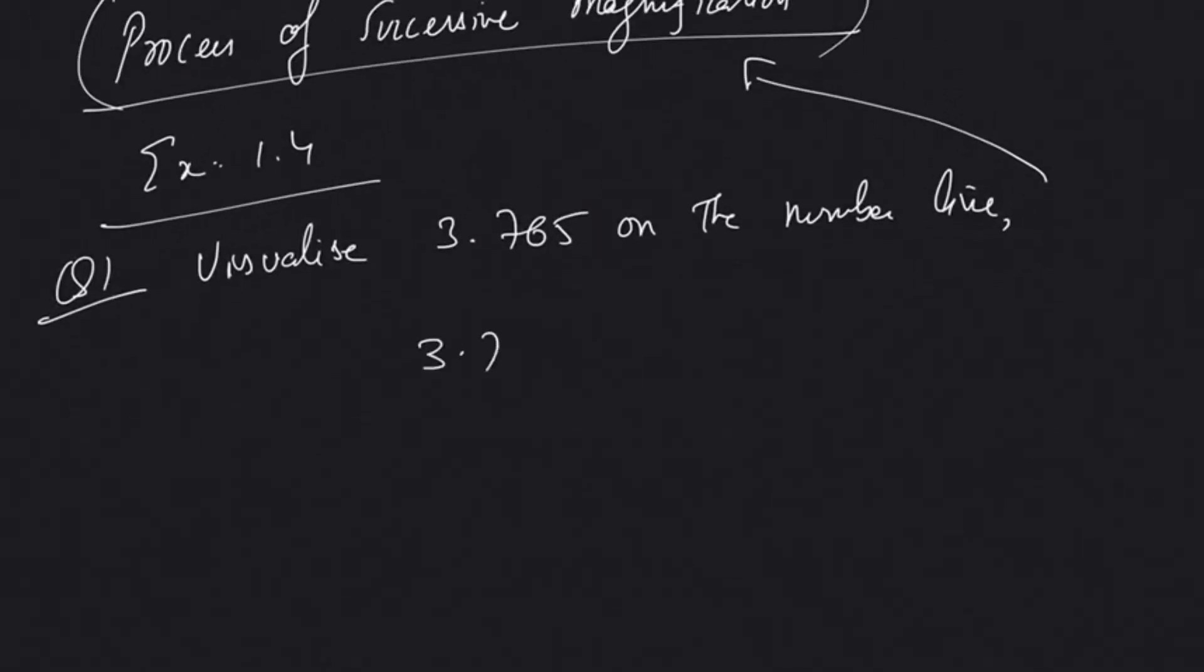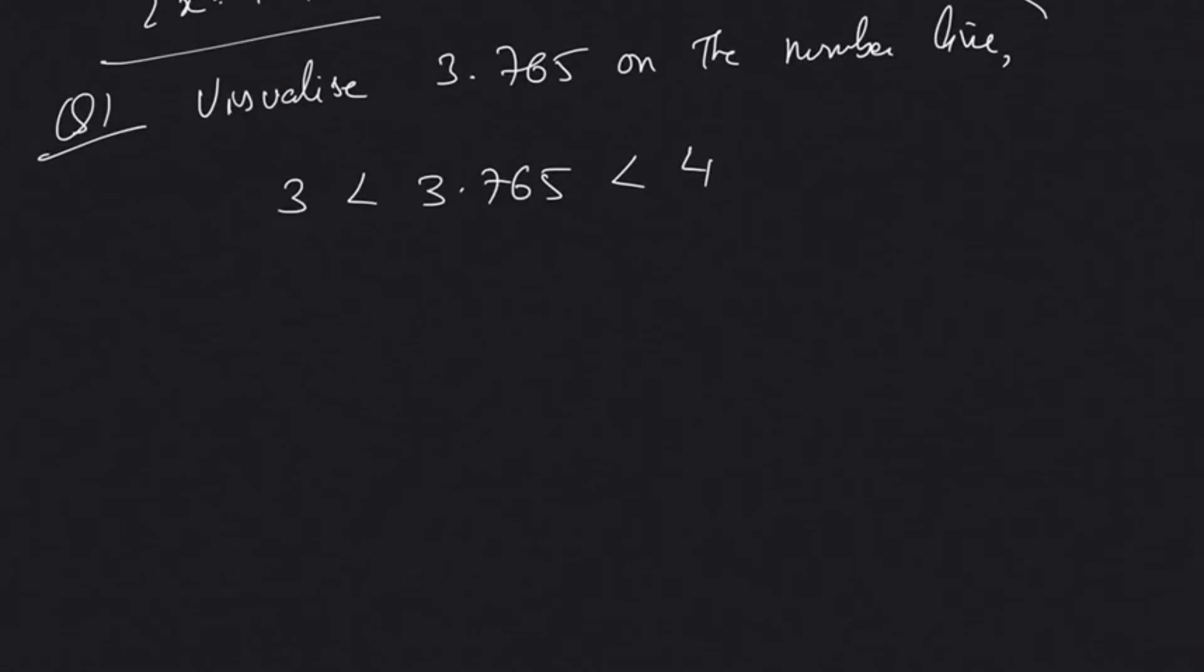So here we have to identify that this 3.765 actually lies between the natural numbers 4 and 3. For that what we will do is we will draw a line. I cannot be using a scale here, but I would suggest students to use scales and see to it that you use at least one centimeter distance per unit using your scales.